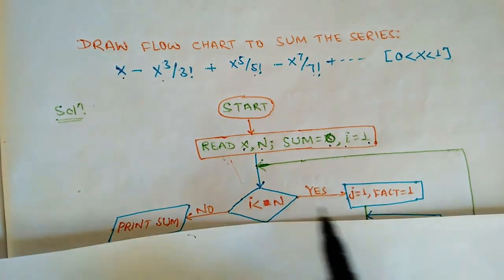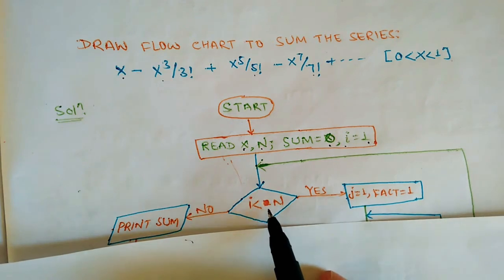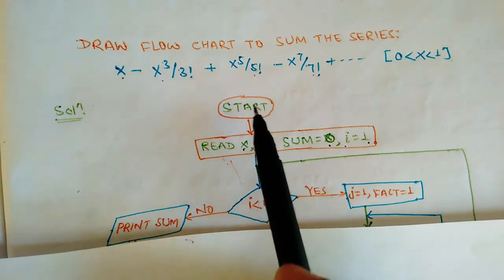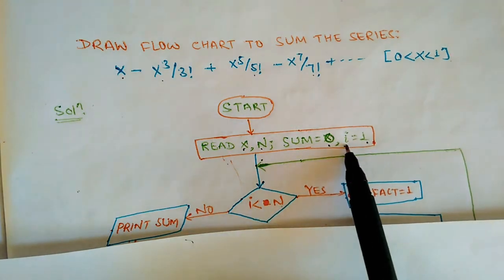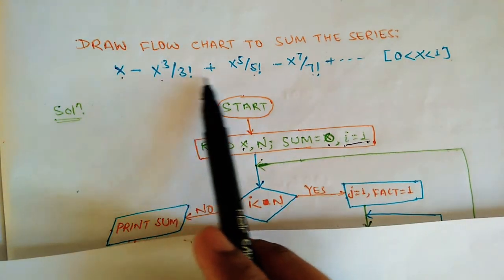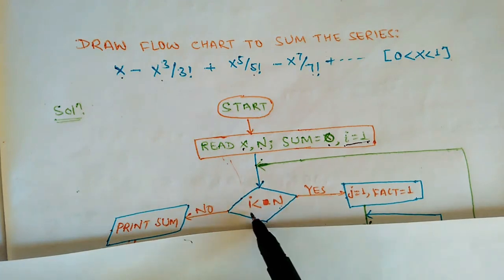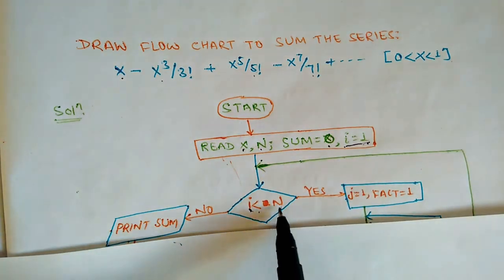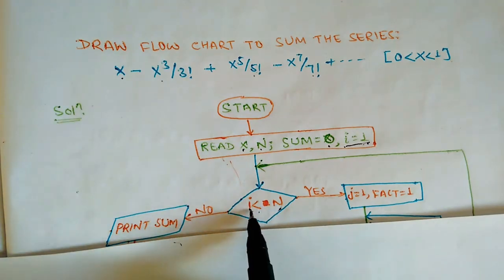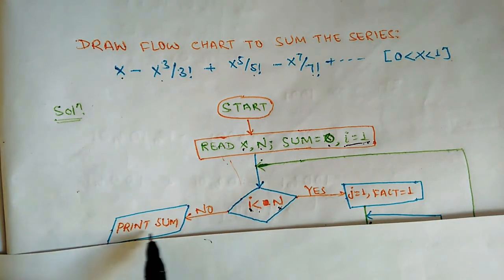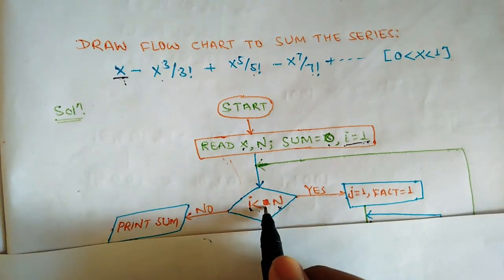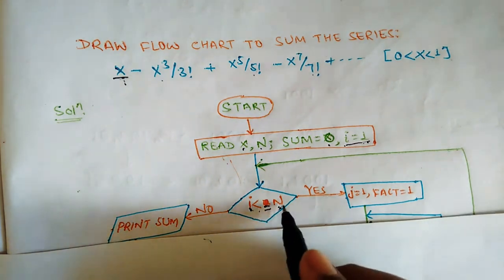Now we see the condition: i less than or equal to n. If n value is 0 and i value is 1, then 1 less than or equal to 0 is false, so the loop won't execute and sum will be 0. If n value is 1 and i value is 1, then 1 less than or equal to 1 is true, so x will be printed.